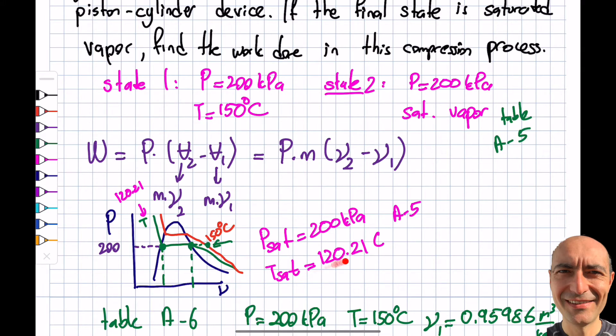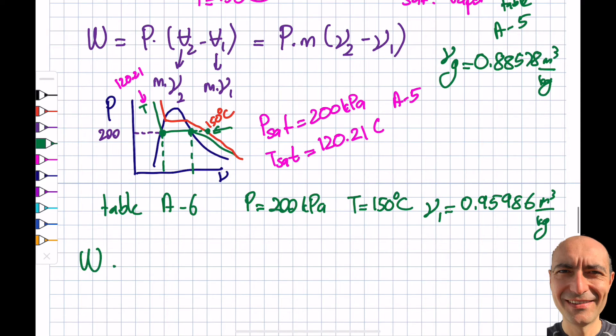I go to simply table A-5 - that's actually where I got this information. The temperature is 120.21 for this particular case. I'm looking at this point. That's what the question is asking you - saturated vapor 100%, the x = 1. Then I look at the Vg information and it's listed there as 0.88578 m³/kg.